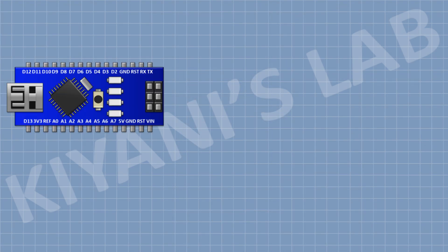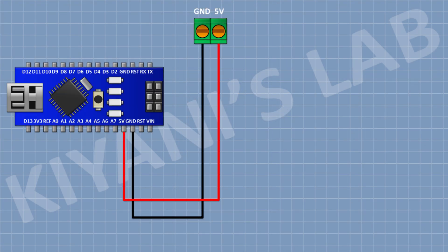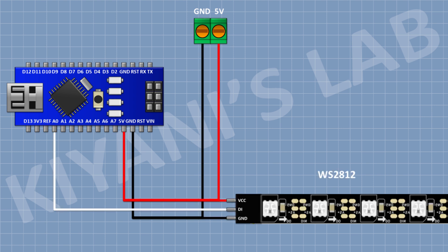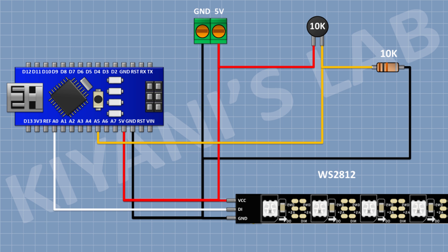First connect Arduino. Now connect a 2-pin terminal block and connect its 1 pin to the 5V pin of Arduino and its other pin to ground. Now connect the NeoPixel light — connect its VCC pin to the 5V pin of Arduino, its ground pin to ground, and its data-in pin to the A0 pin of Arduino. Now connect the 10K resistor — connect its 1 pin to the 5V pin of Arduino and its other pin to A5. Then connect another 10K resistor with its 1 pin to A5 and its other pin to ground. So we have completed all the connections.